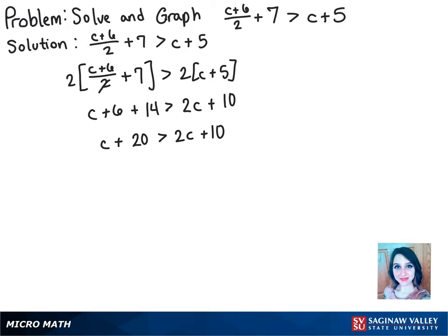We of course want c by itself, so we can subtract the c over here into the 2c, so those cancel, and we get 20 is greater than c plus 10.